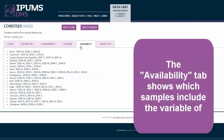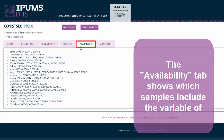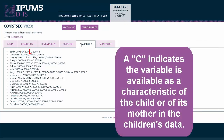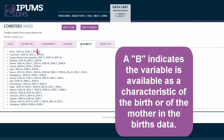The Availability tab shows which samples include the variable of interest. A W next to the year indicates the variable is available in the women's data. A C indicates the variable is available as a characteristic of the child or of its mother in the children's data. A B indicates the variable is available as a characteristic of the birth or of the mother in the birth's data.